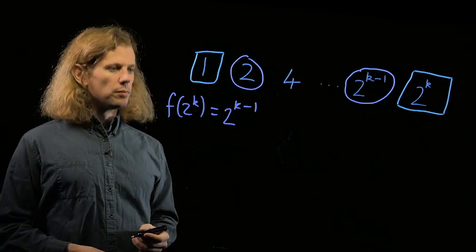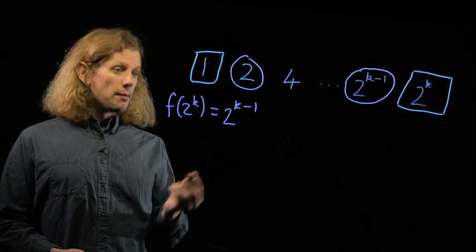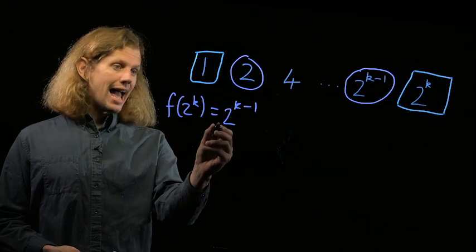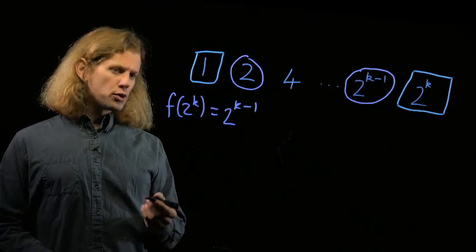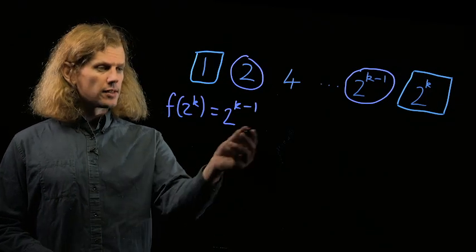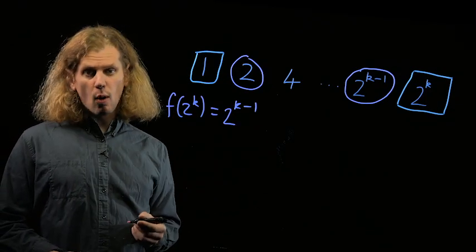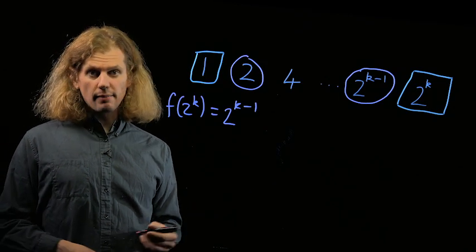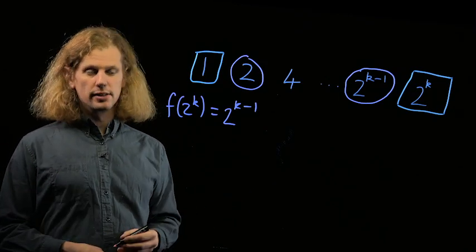Unfortunately, this alone is not going to solve the problem. We were asked to find a number that was a multiple of n for any n, and unfortunately if we find that f of 2 to the k is 2 to the k minus 1, this means the numbers that this is going to have as a factor are quite limited. So we're going to have to try something else in order to get bigger examples with more factors.